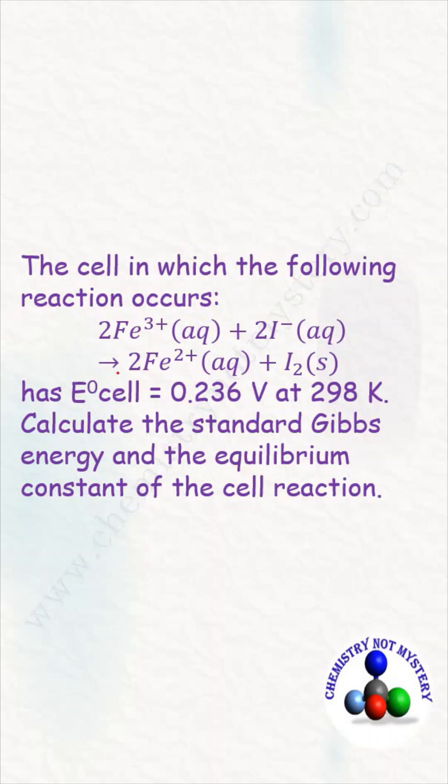The cell in which the following reaction occurs has E°cell = 0.236V at 298K. Calculate the standard Gibbs free energy and equilibrium constant of the cell reaction.